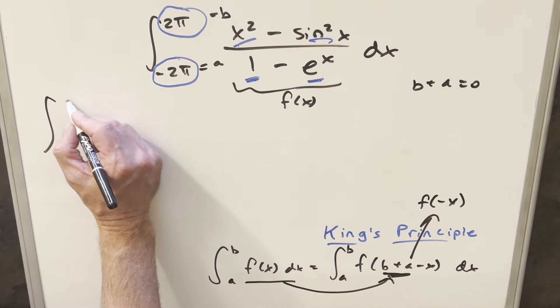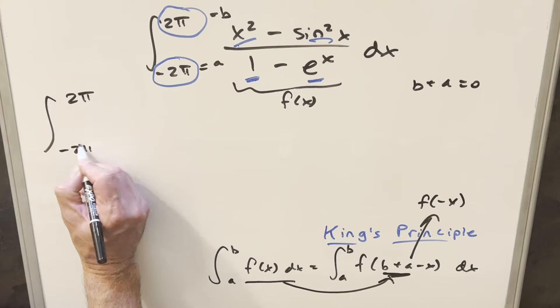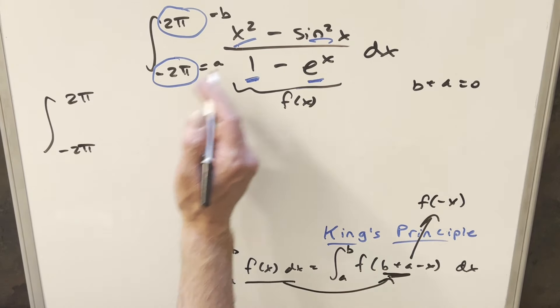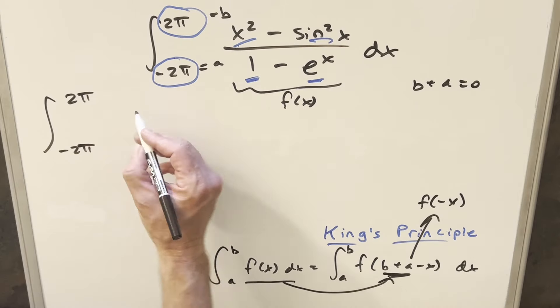So let's use the formula and see what happens to this thing. The bounds stay the same. So we're still going -2π to 2π. And then everywhere we see an x, we just want to input -x.